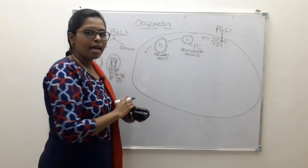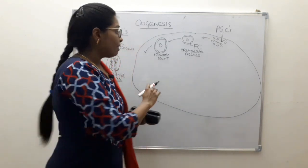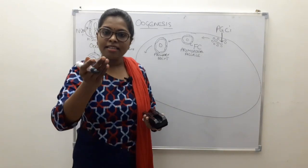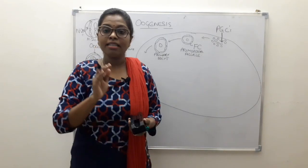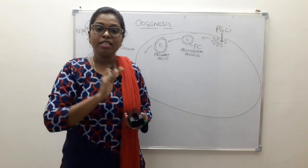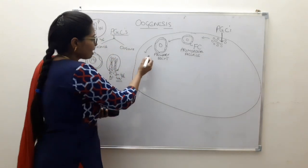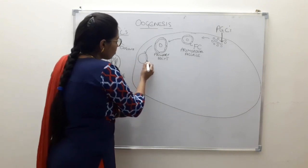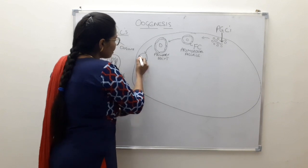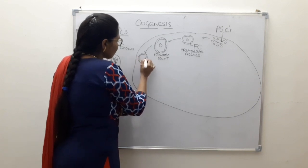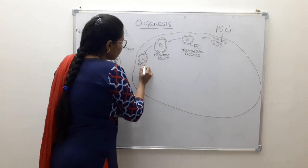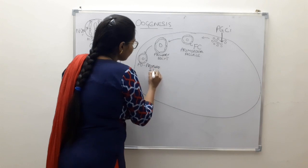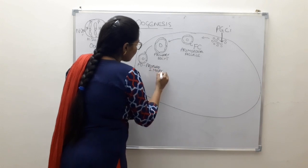Just before birth, this primary oocyte will divide — it will enter the first meiotic division. However, it is arrested in the prophase of the first meiotic division.